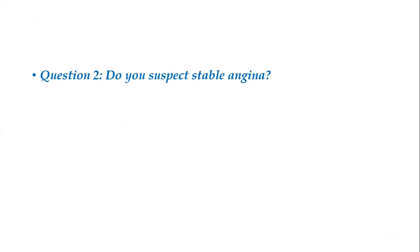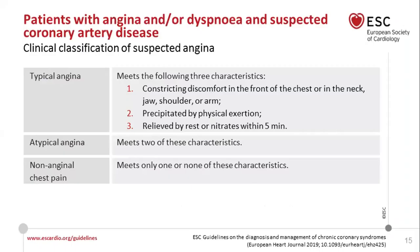There is a criteria to define stable angina based on three characteristics. The first is the quality of the pain: constricting discomfort of the chest that radiates. The second is the precipitant: it occurs on physical exertion and is relieved by rest or nitrates. If somebody fulfills all three characteristics, it is classified as typical angina. If two of the three are fulfilled, it is atypical angina. If it meets only one or none, it is non-anginal chest pain.